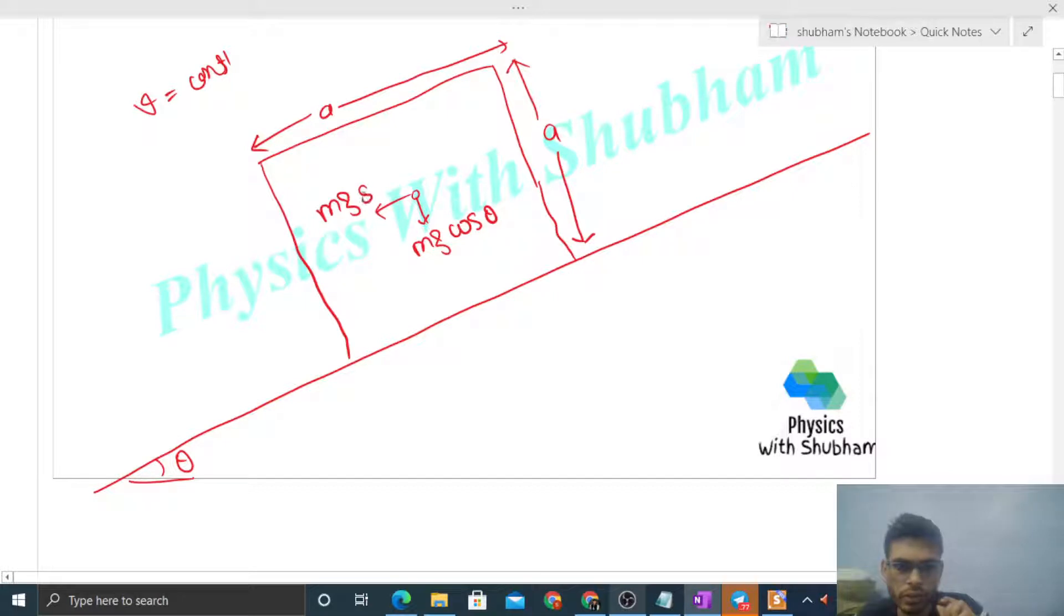Then there's a normal reaction. Normal reaction is a contact force that acts where the two surfaces are in contact with each other. Where those surfaces are in contact, normal reaction will act.